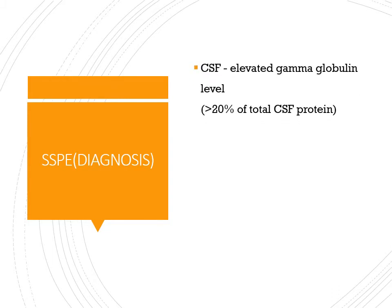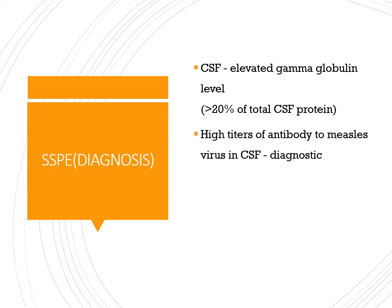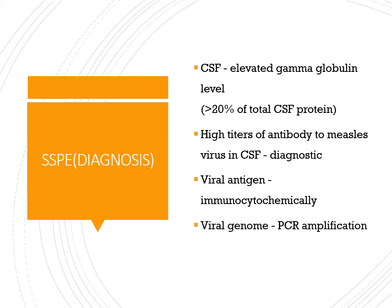Diagnosis of SSPE is done using CSF — gamma globulins will be raised. A high titer of antibody to measles virus is also very useful. You can detect viral antigen and viral genome using PCR.